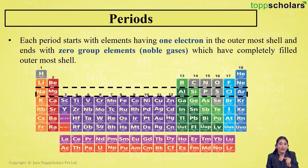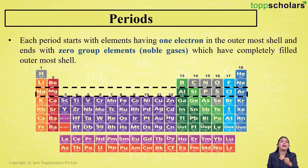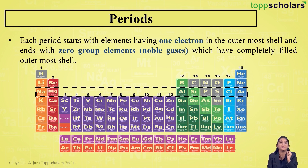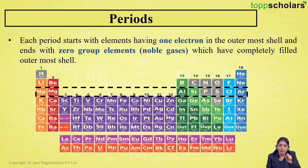From this, we come to know that each period in the periodic table starts with elements having one electron in the outermost shell and ends with zero group elements — that is, noble gases, also called inert gases, which have a completely filled outermost shell.